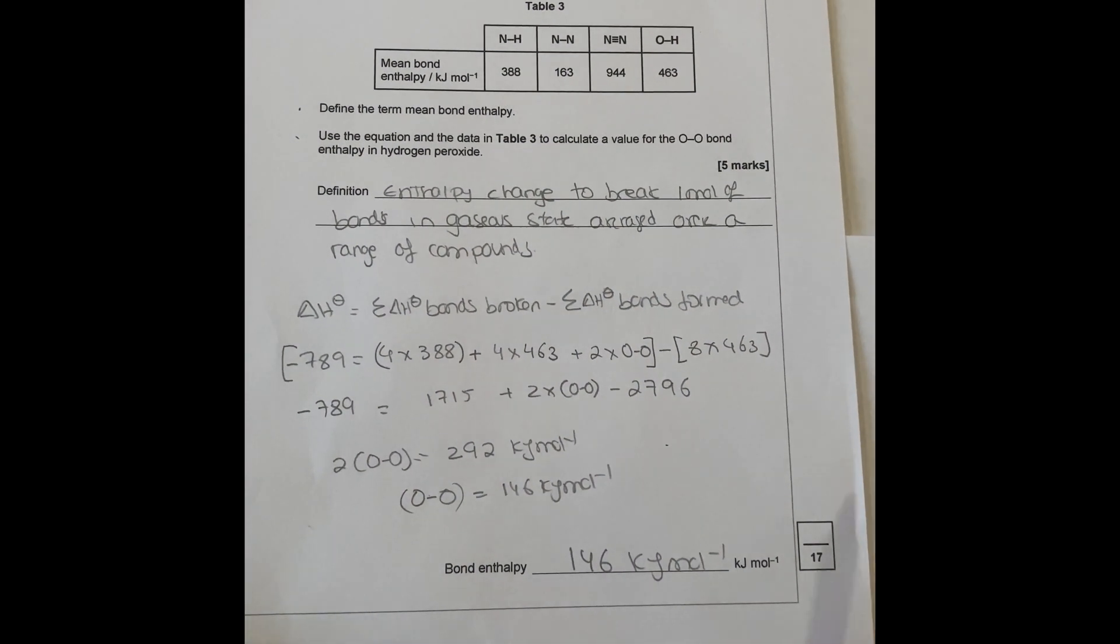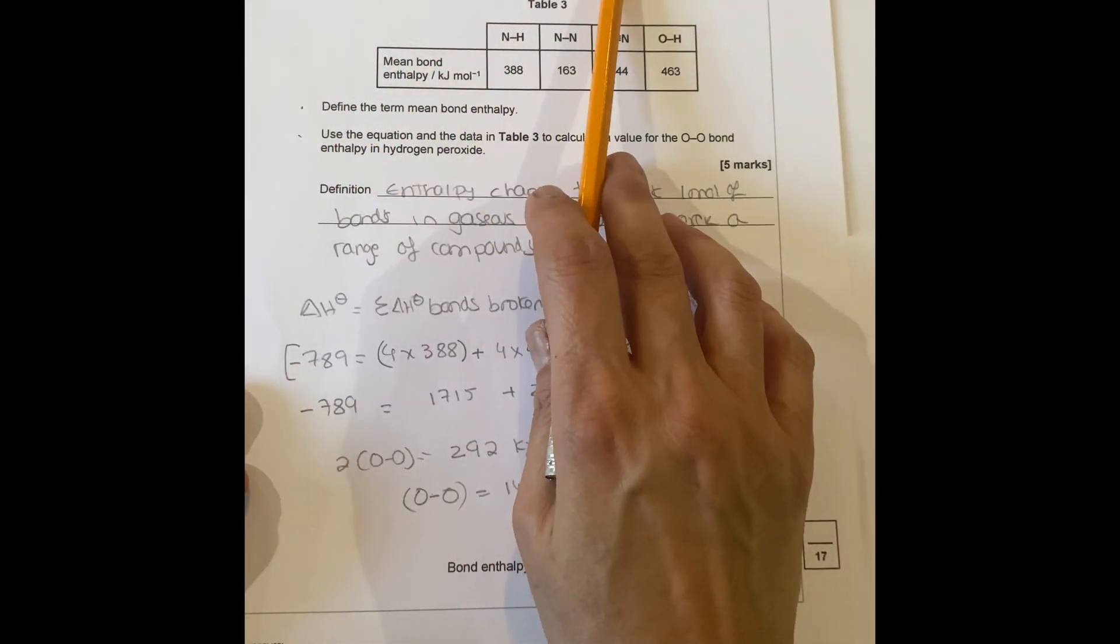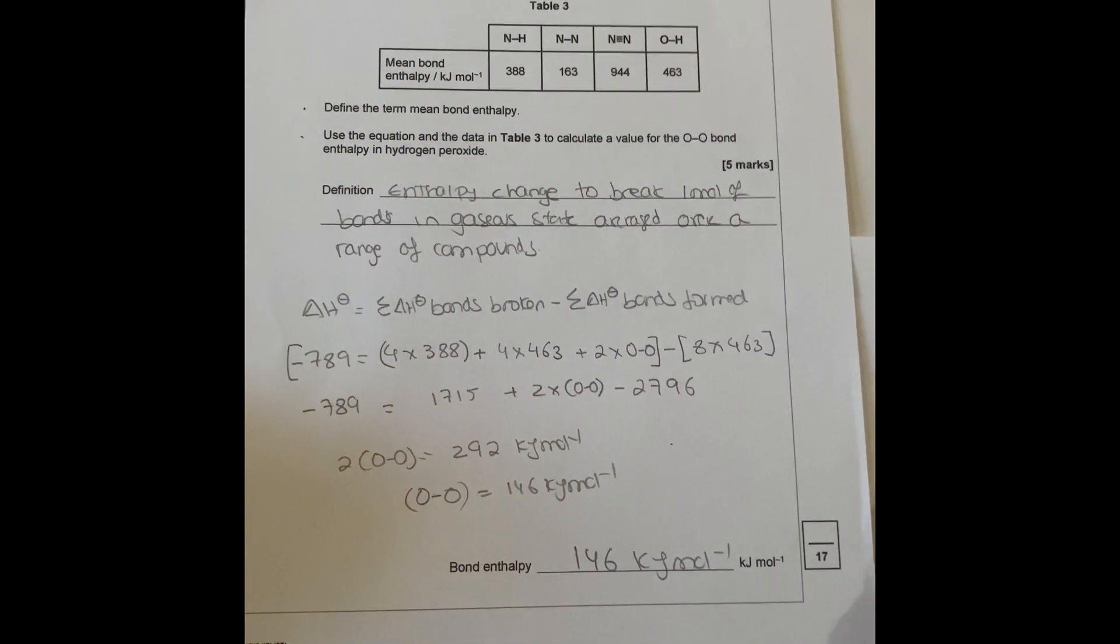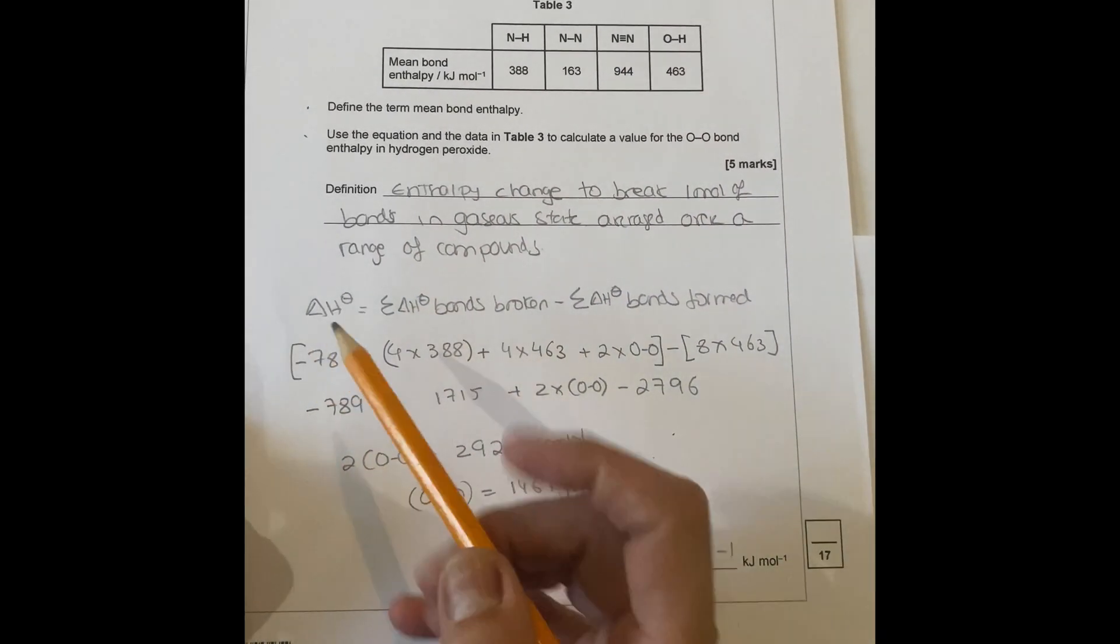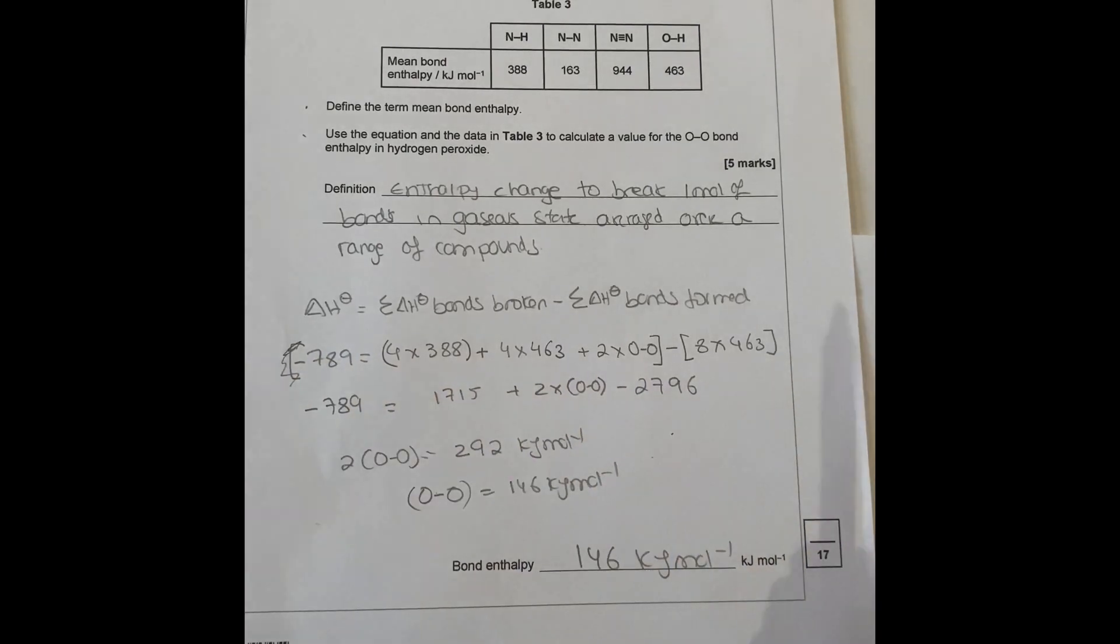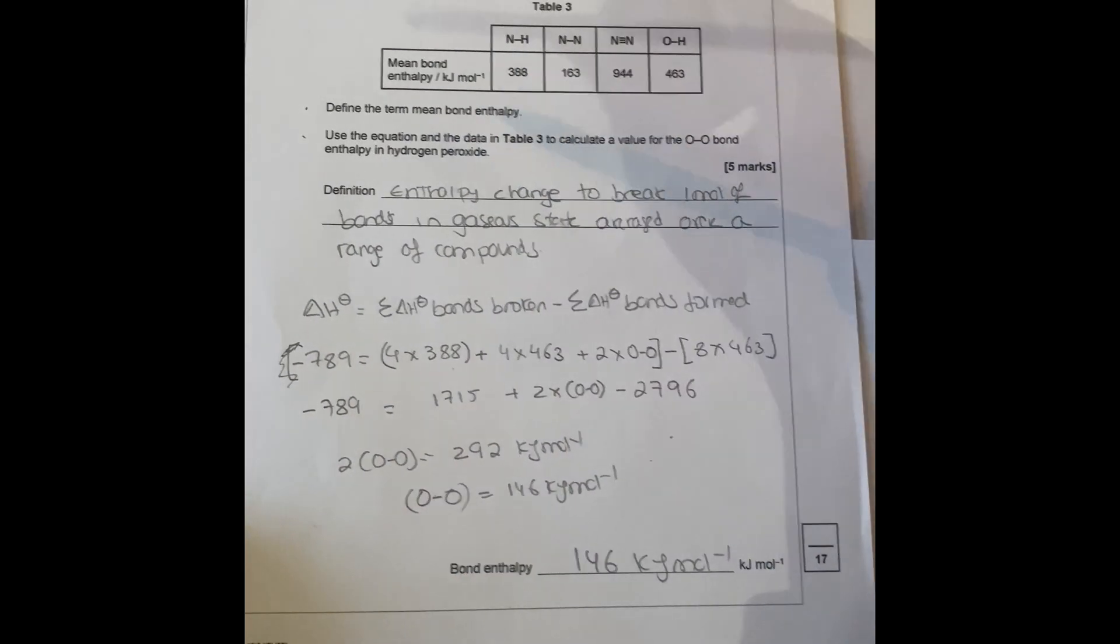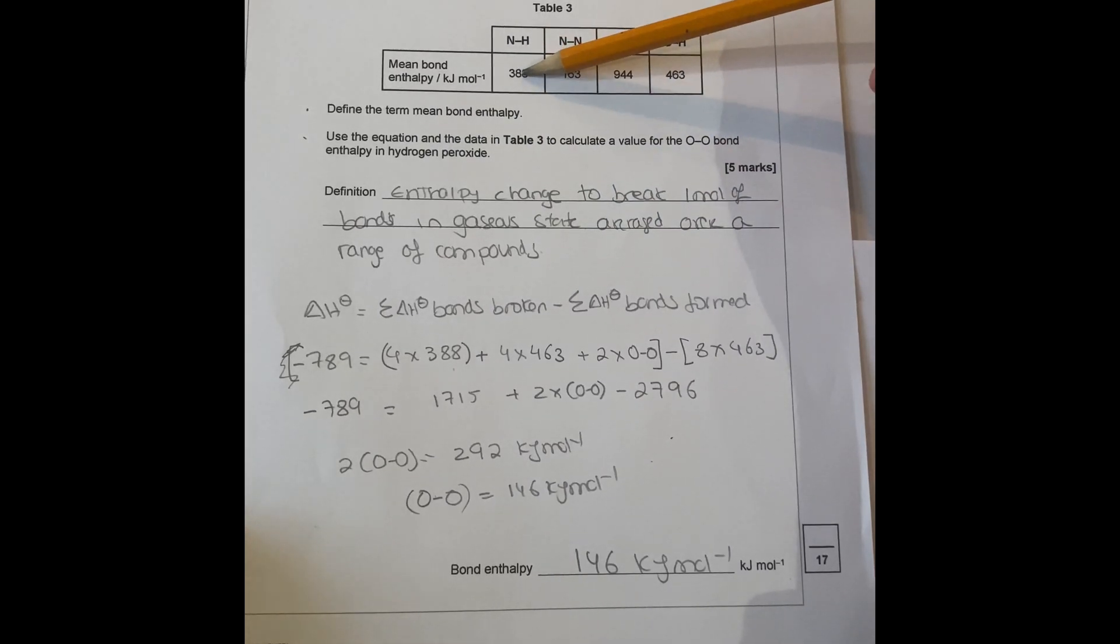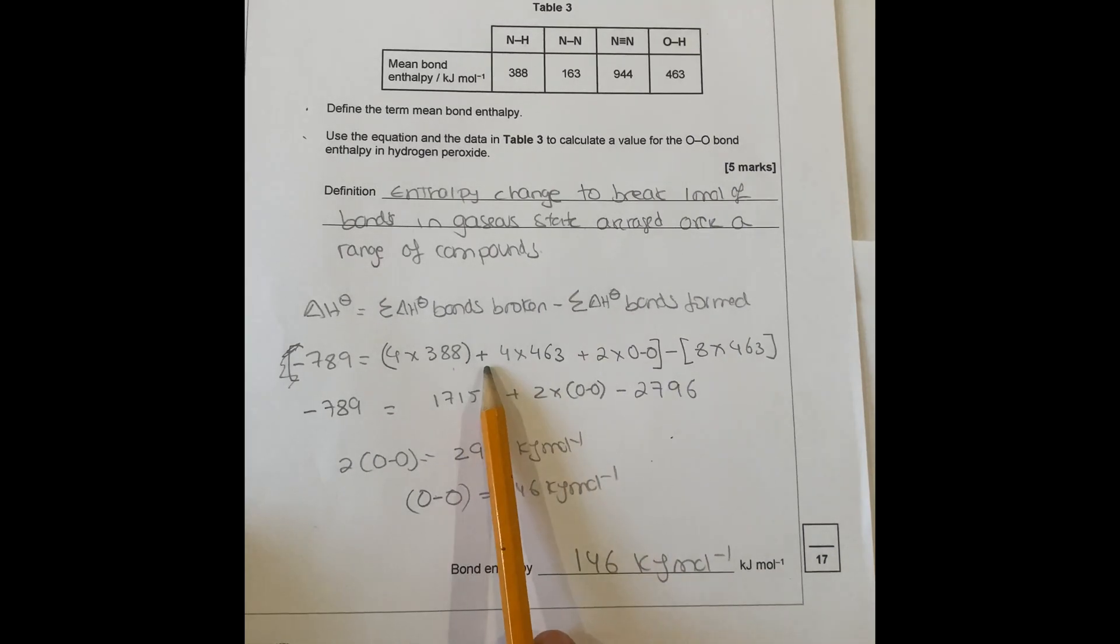How do you calculate the mean bond enthalpy? You start by placing that equation as delta H equals the sum of delta H bonds broken minus sum of delta H bonds formed. That will always help you if you set up like that. Bonds broken is going to be the reactants and bonds formed is going to be the products. You've got minus 789 equals four times 388 because it's four times NH.